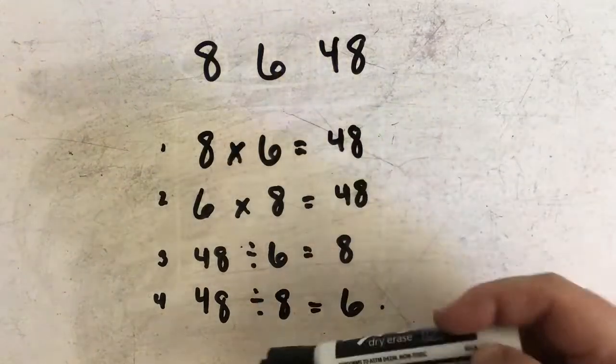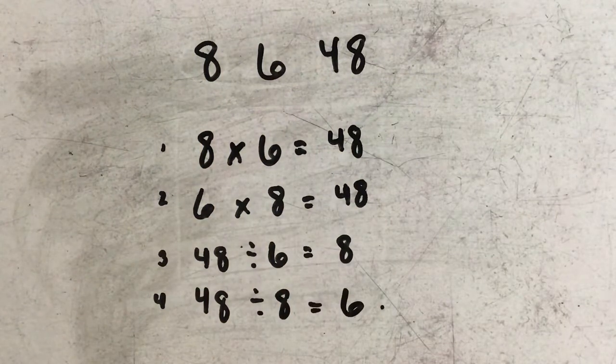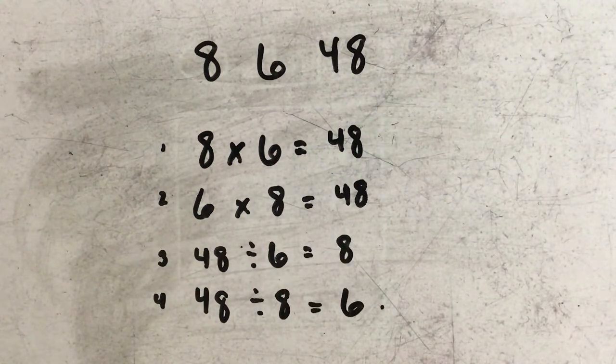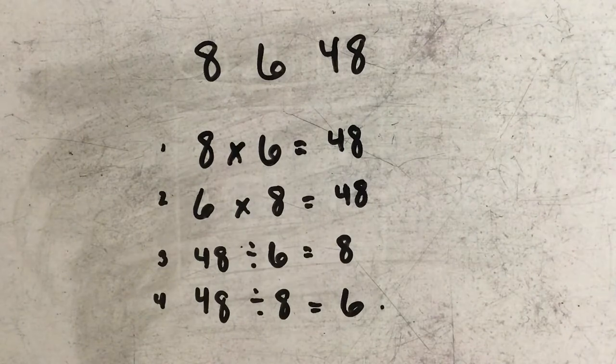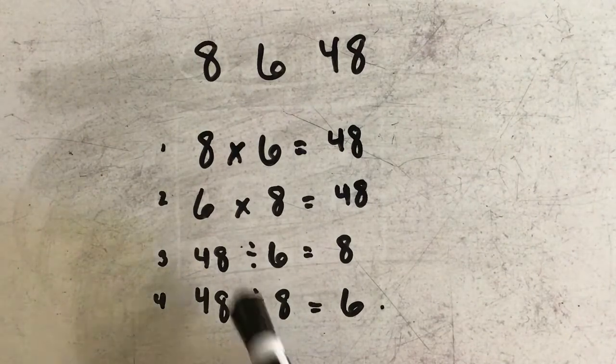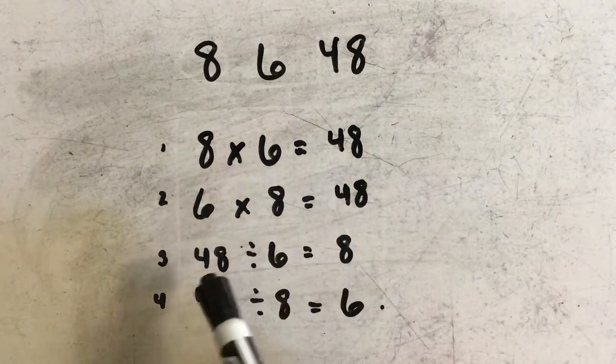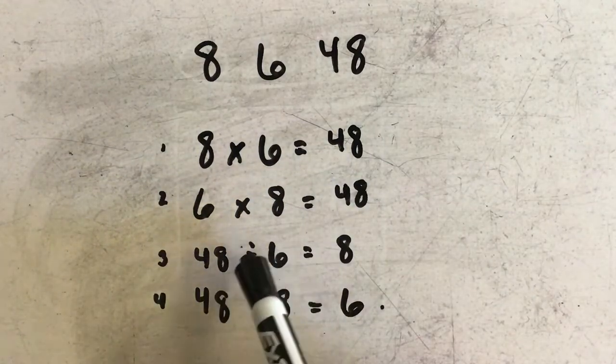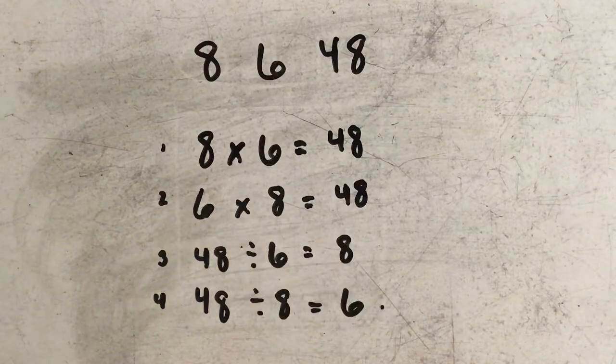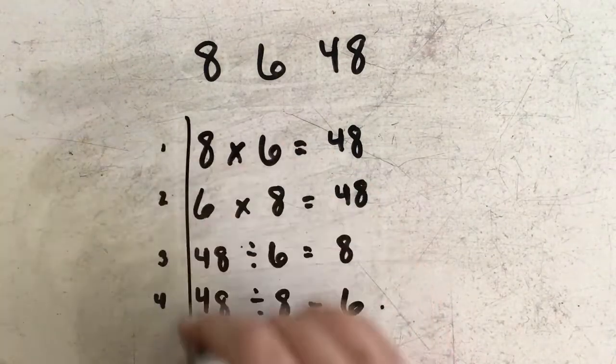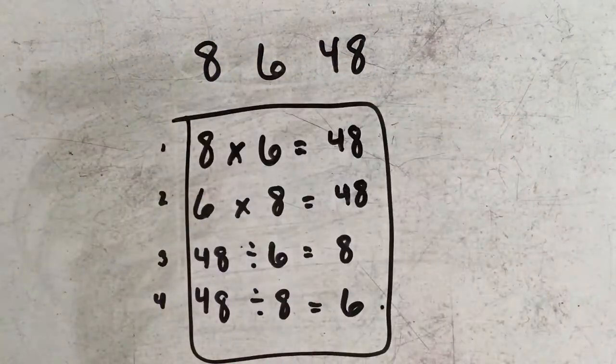And this works, guys, because multiplication and division are inverse operations of each other. In other words, they also share a special relationship. So when I have numbers that can be multiplied together to get an answer, I can also divide that answer by one of the factors to get the other factor. And we call this group fact families.